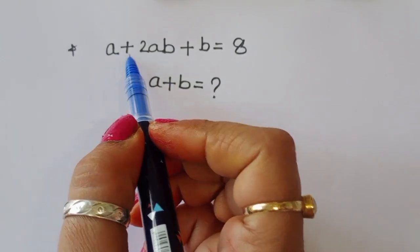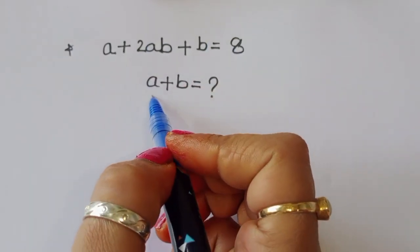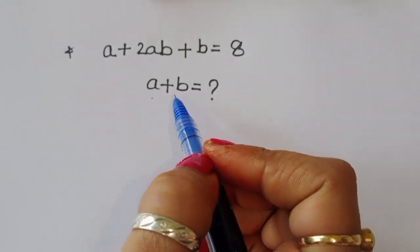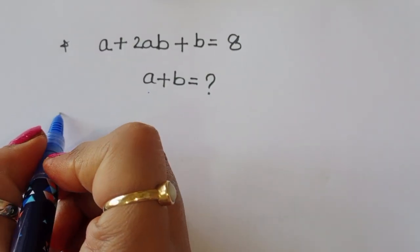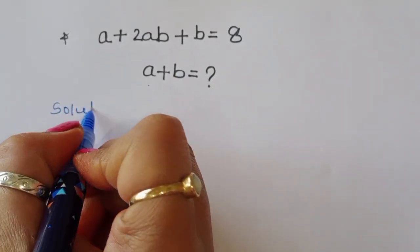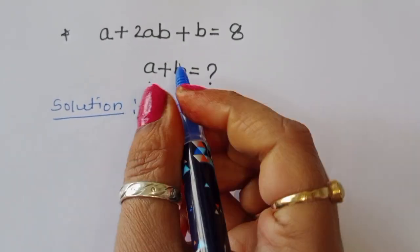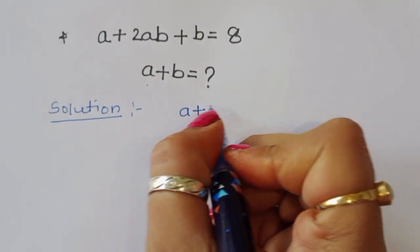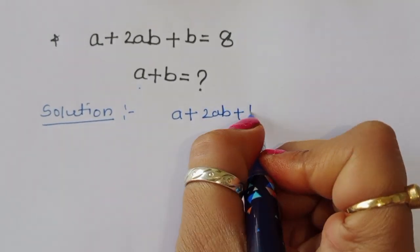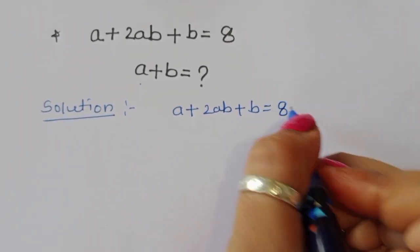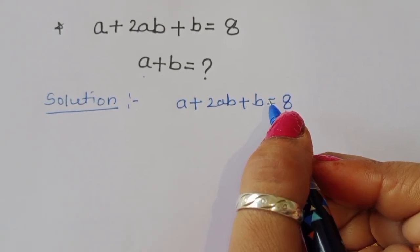The question is: given a plus 2ab plus b is equal to 8, we have to find out the value of a plus b. How can we find out the value of a plus b? Let's see the solution.